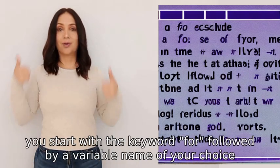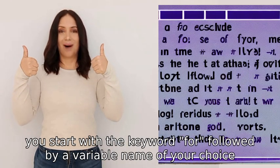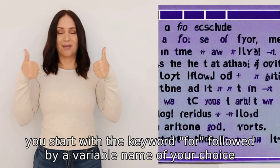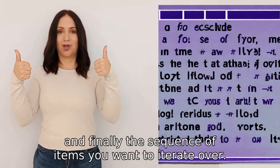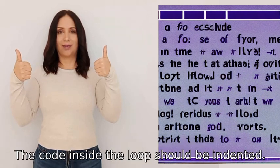To write a for loop in Python, you start with the keyword 'for' followed by a variable name of your choice, then the keyword 'in', and finally the sequence of items you want to iterate over.